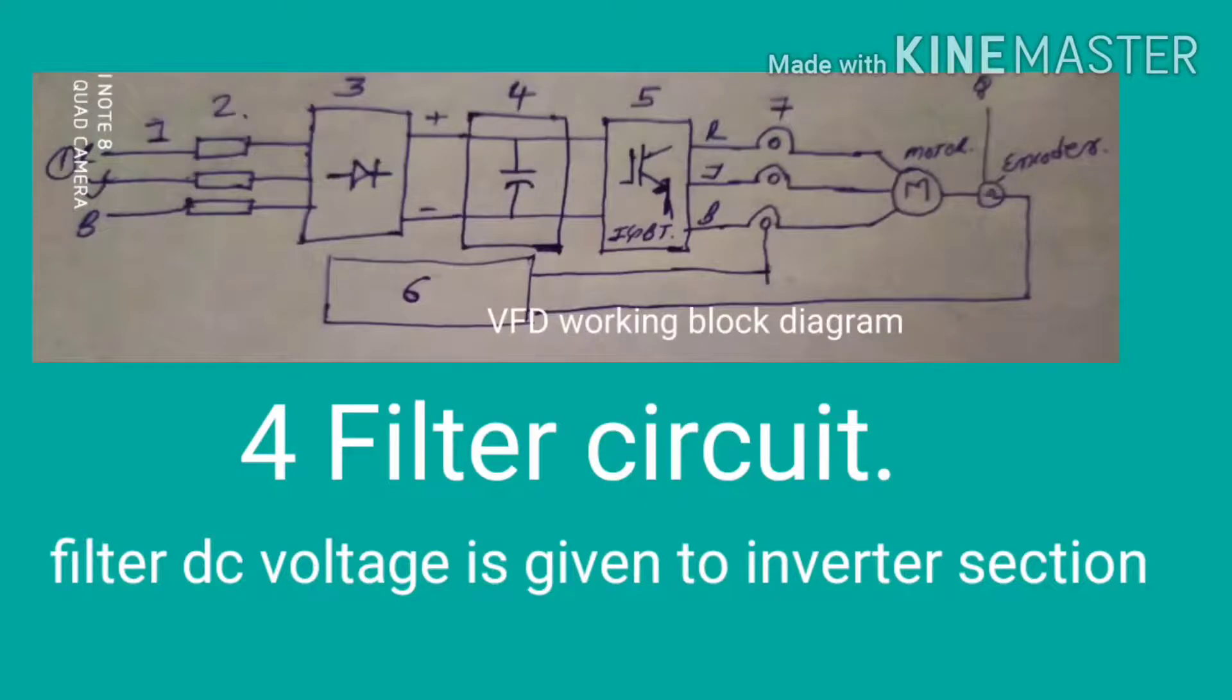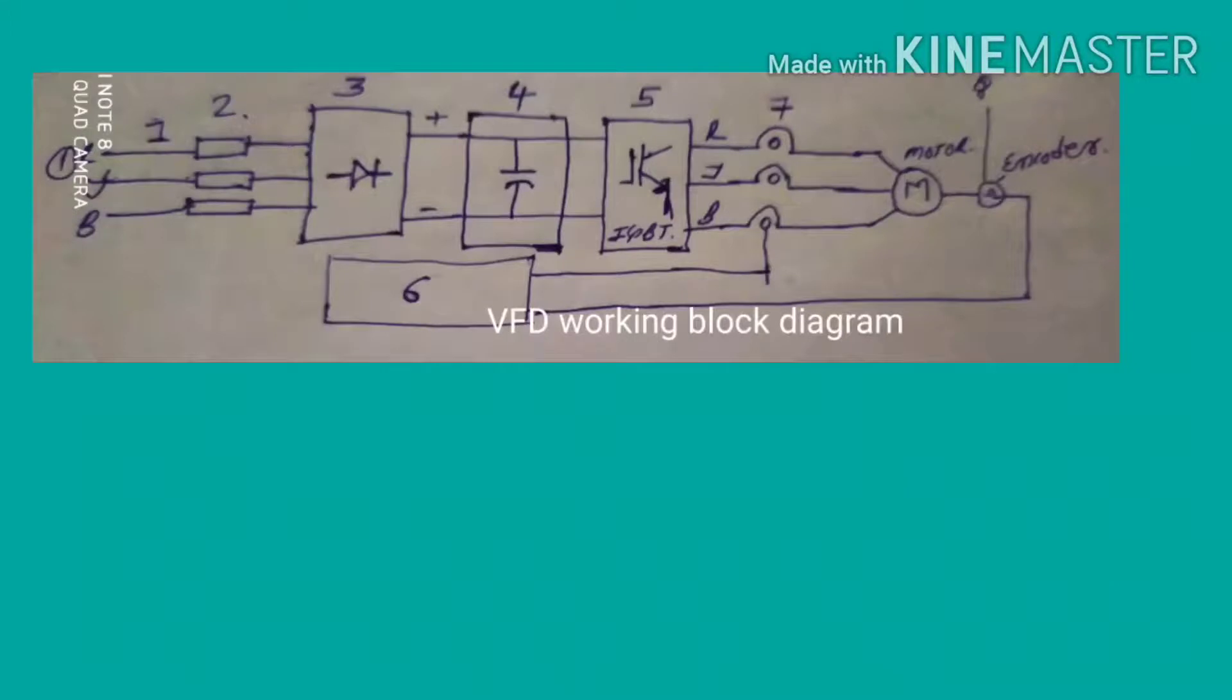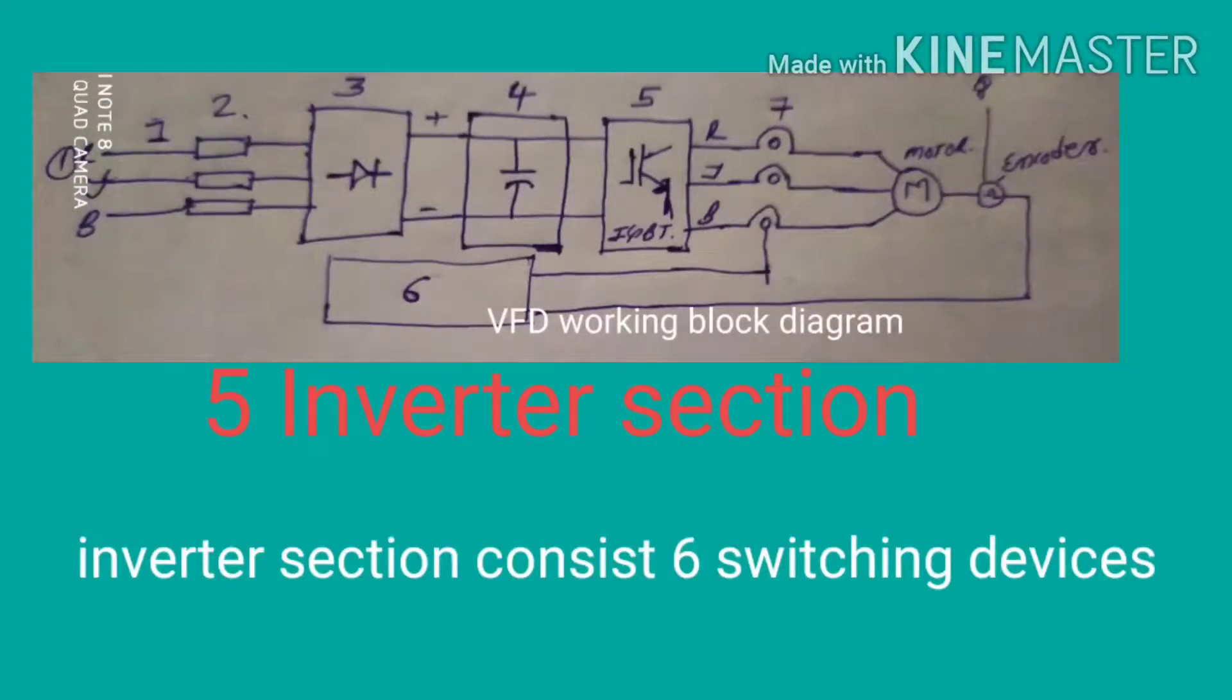Now the filtered DC voltage is given to the inverter section. In the inverter section, as shown here in block diagram, inverter section has a total six switching devices.